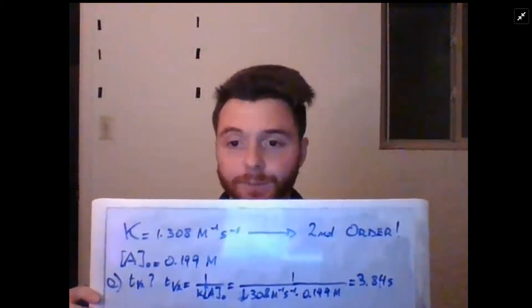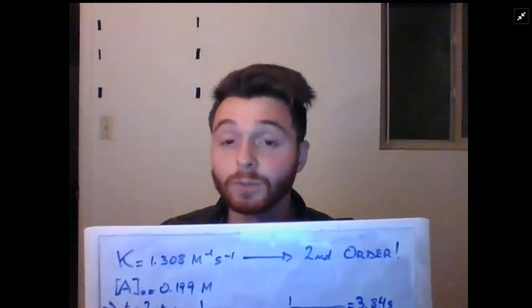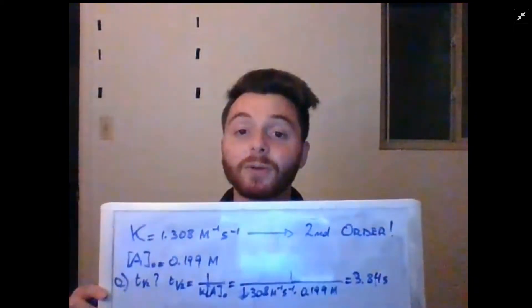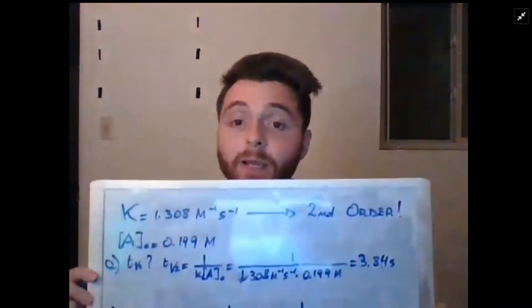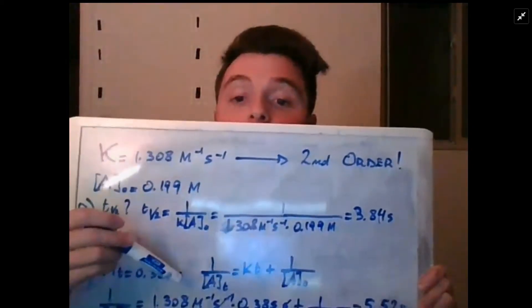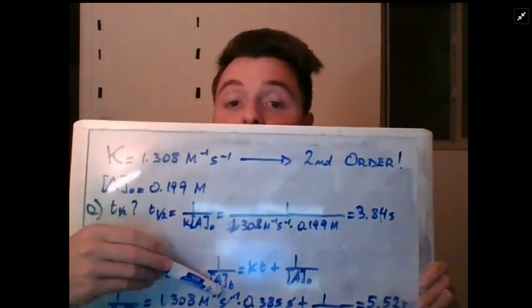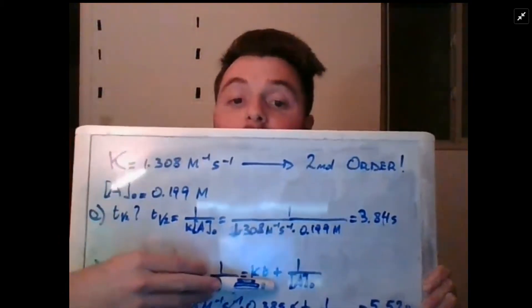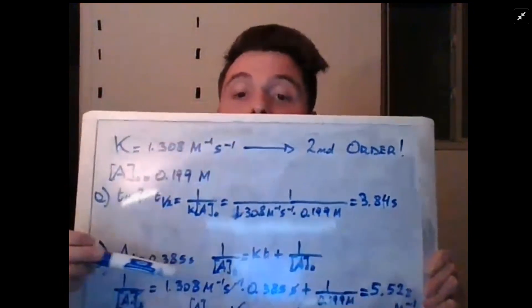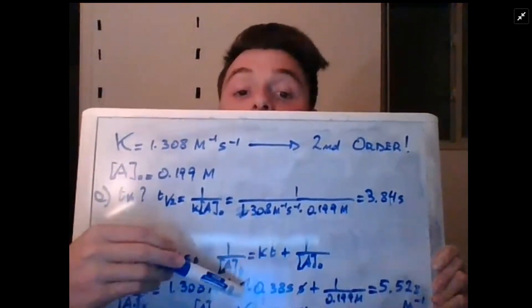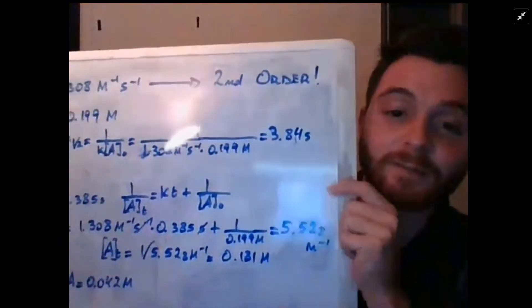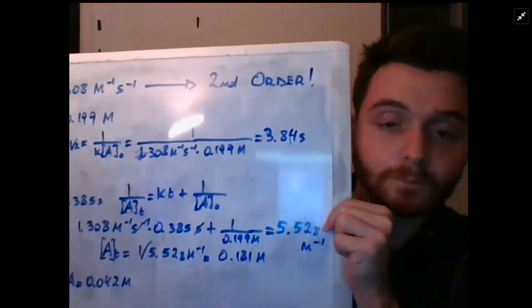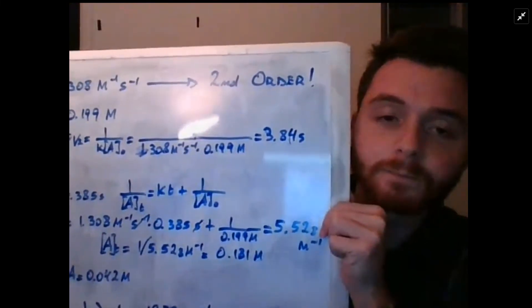The second part asks us to calculate the concentration after 0.385 seconds. Since this is a second-order reaction, we apply the integrated rate law: one over the concentration at time t is equal to k times t plus one over the initial concentration. We plug in those values, make sure units cancel out, and we get 5.528 inverse molar.